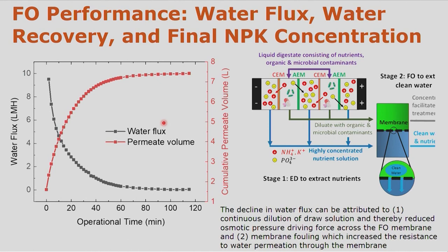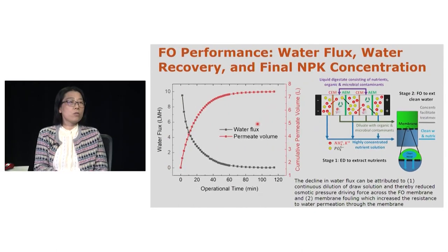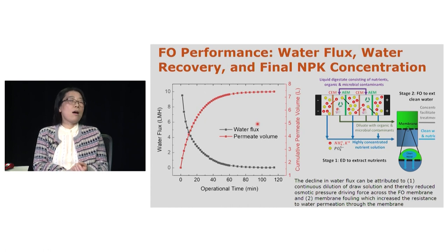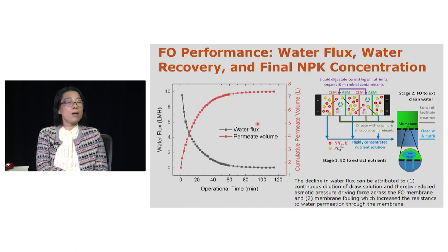We are also working on membrane modification. Current commercial membranes cannot distinguish between nutrient ions like ammonia and potassium versus non-beneficial sodium, which is not good for crops. We want to increase membrane selectivity toward nutrient ions. We thank the Gresham and Coales Wastewater Treatment Facilities for providing samples. This project was supported by the OSU Agricultural Research Foundation seeding grant, which helped us get preliminary data, and we successfully obtained funding from USDA and recently from the OSU AID program to move toward commercialization.